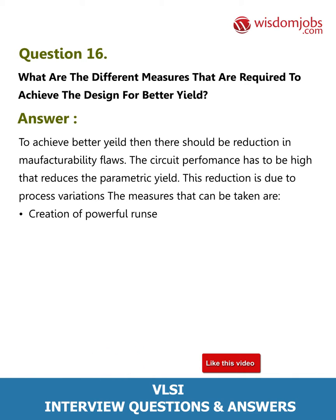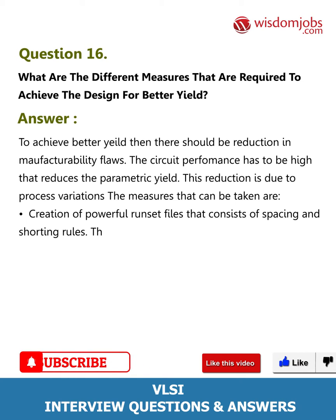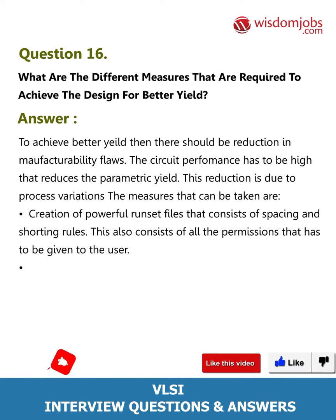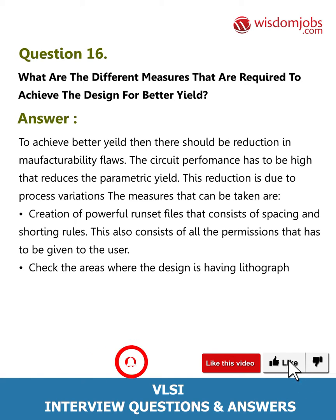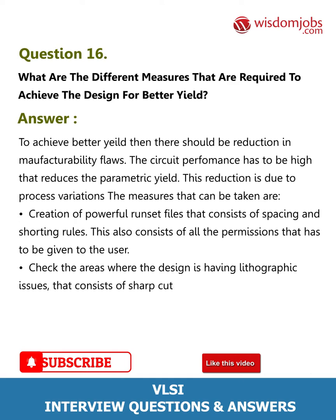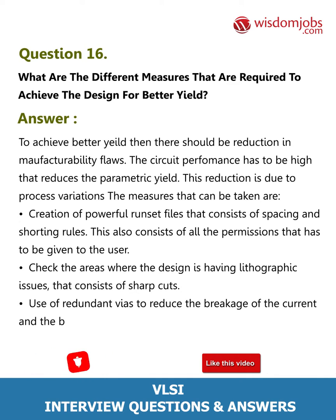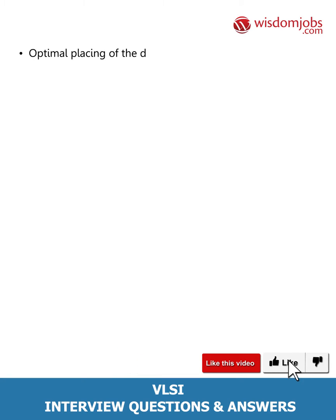The measures that can be taken are: creation of powerful run sets of files that consist of spacing and shorting rules, including all the permissions that have to be given to the user. Check the areas where the design is having lithographic issues, which consist of sharp cuts. Use redundant vias to reduce the breakage of current and the barrier.